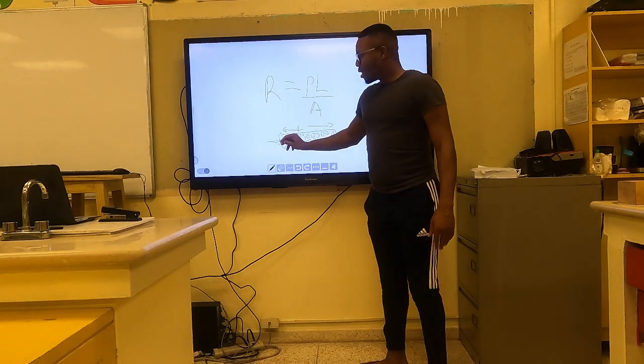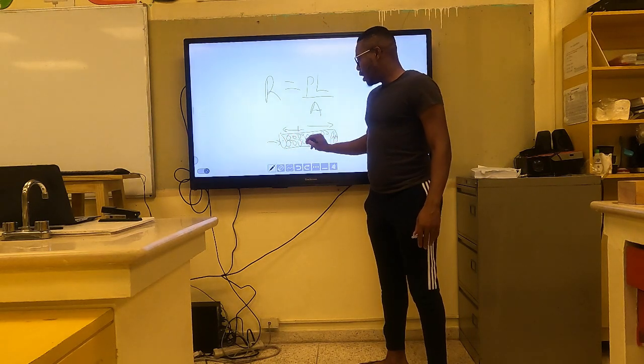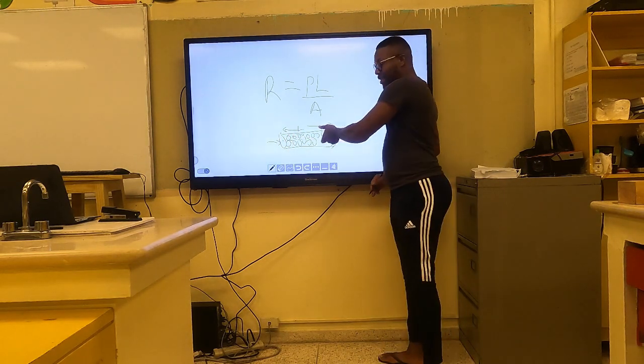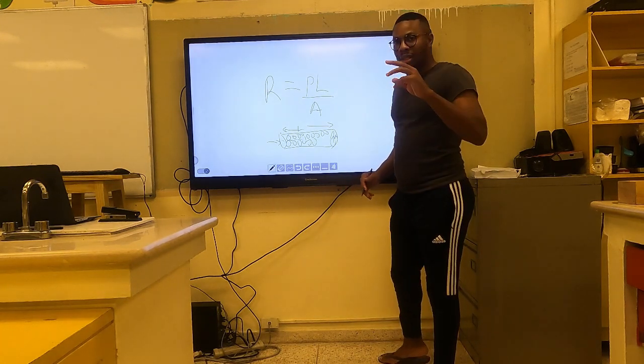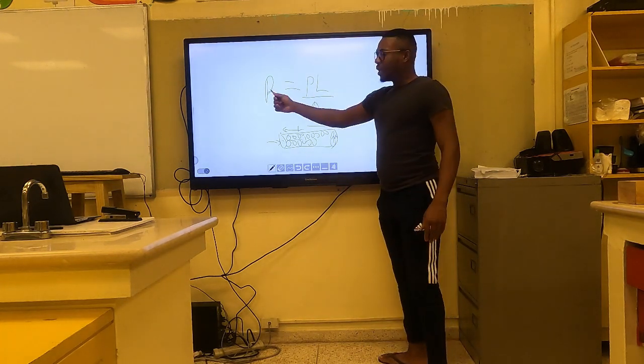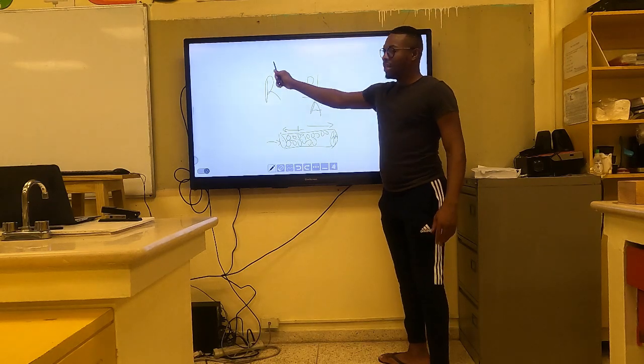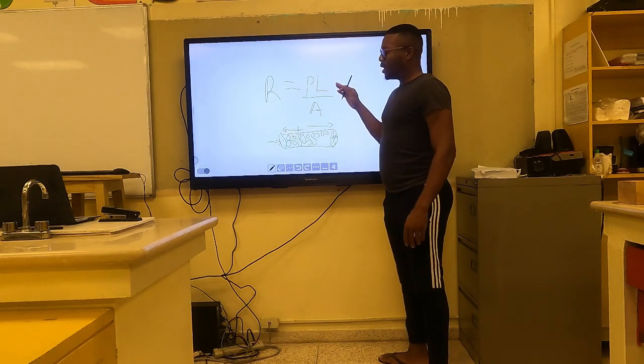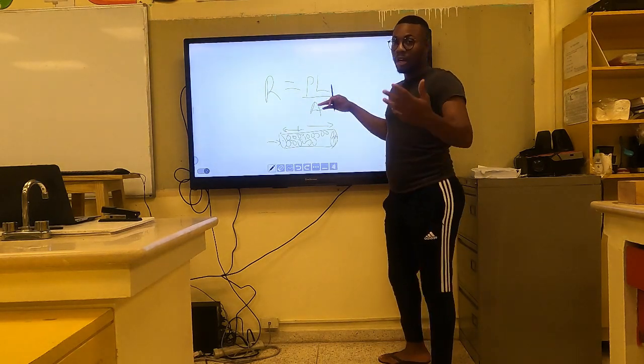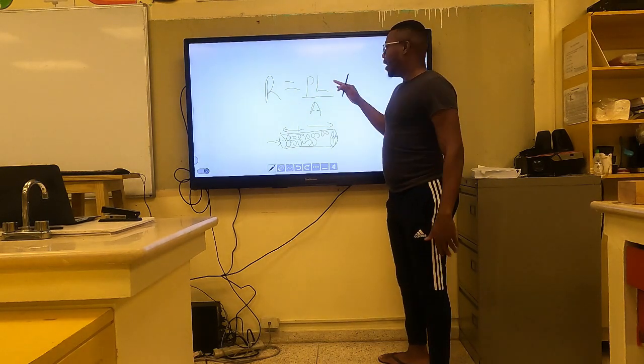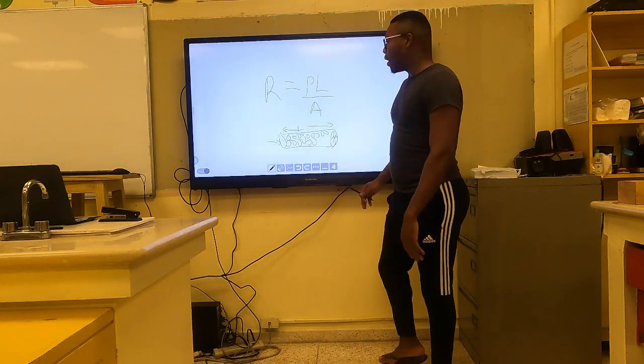What I want you to see is that as we increase the length of the wire, these electrons will have more collisions with the particles as they pass from one end to the next, and that will cause the resistance to increase. Because L is in the numerator of this fraction, we have a directly proportional increase in resistance with the length of wire.